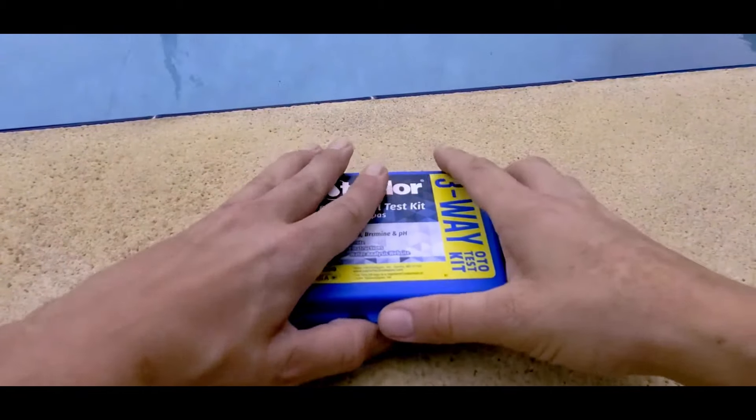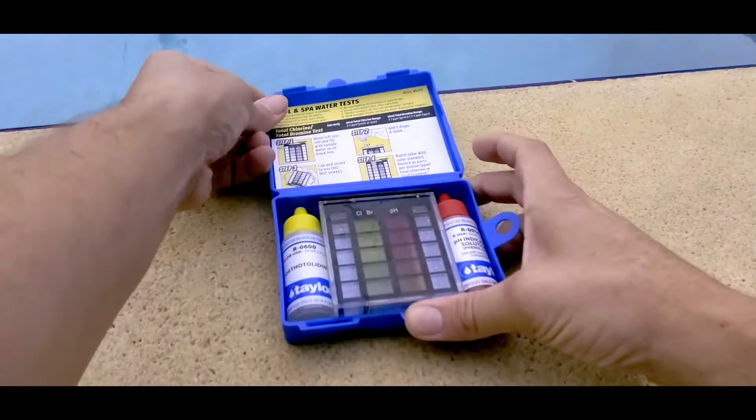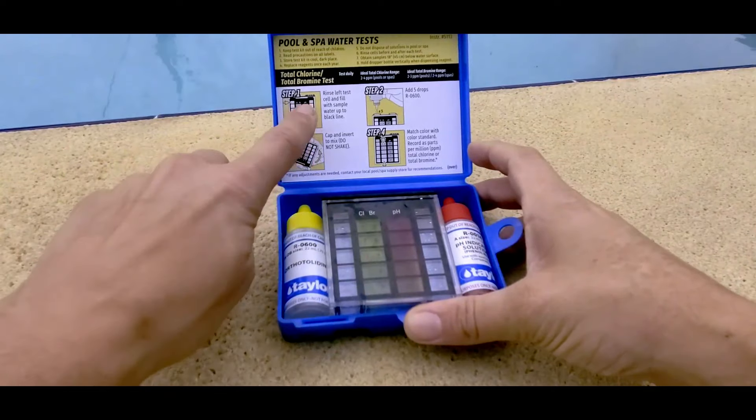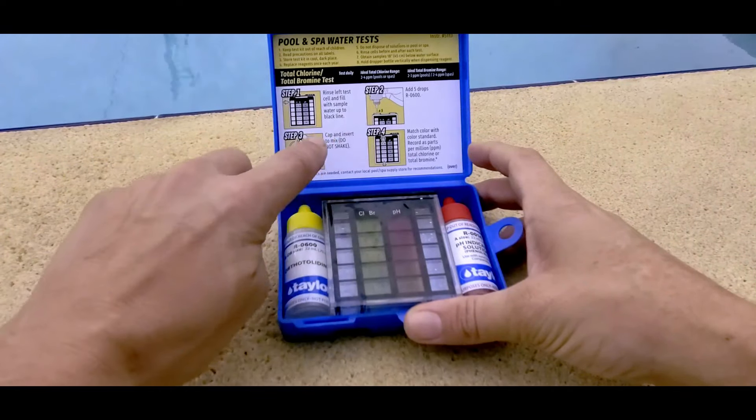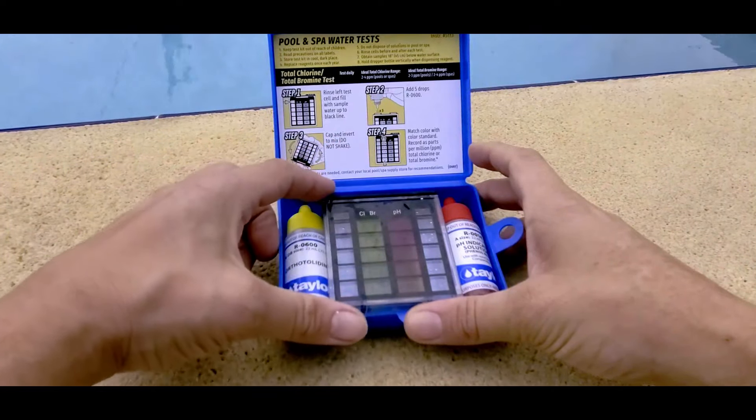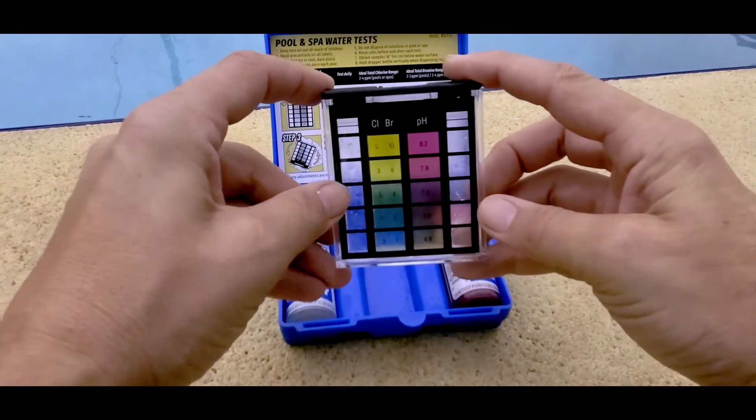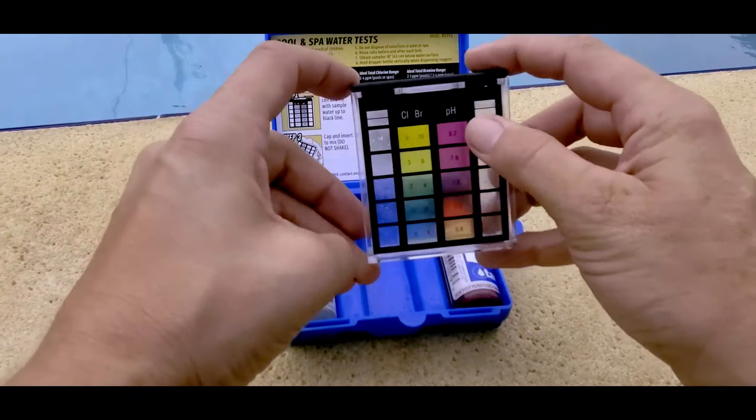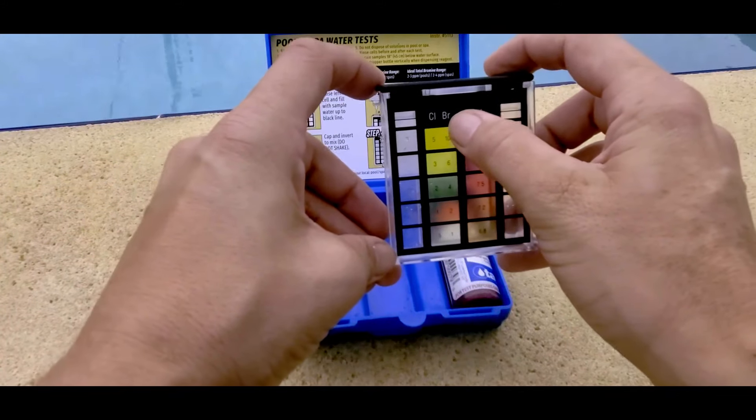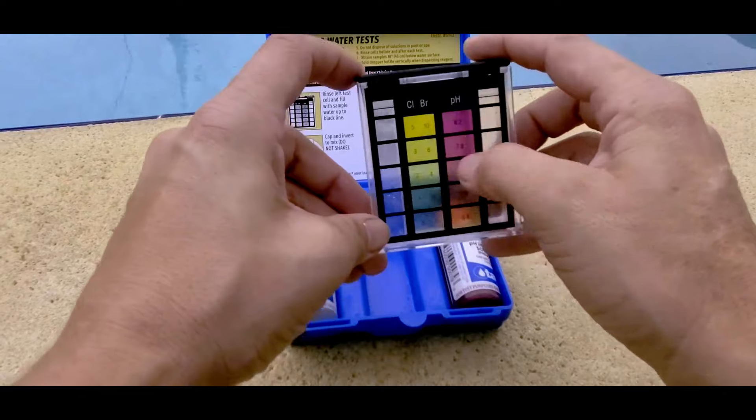Alright, so let's open this kit up and see what's inside. This kit actually has instructions right here, which make it really easy to use. And this is the actual viewer. So this shows chlorine and pH. It also has bromine, but most pools are sanitized using chlorine.